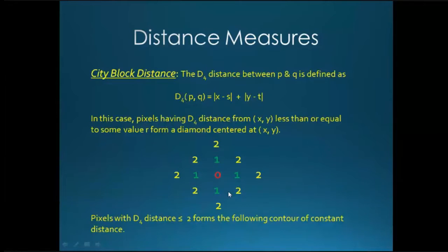The next is D4 distance. D4 distance means what is the D4 distance? It is also called as city block distance. And formula for this is D4 of p, q is equal to mod of x minus s plus mod of y minus t.